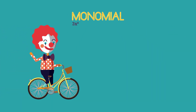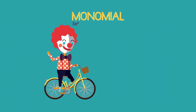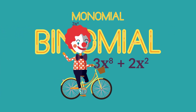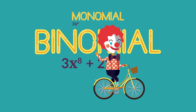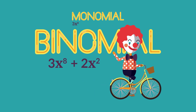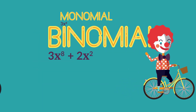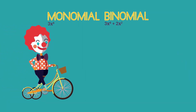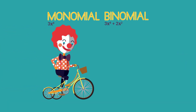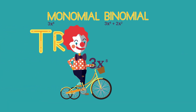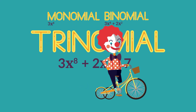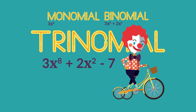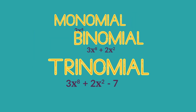Polynomials that have only two terms are called binomials — bi meaning 2. Think bicycle. Polynomials that have only three terms are called trinomials — tri meaning 3. Think tricycle.